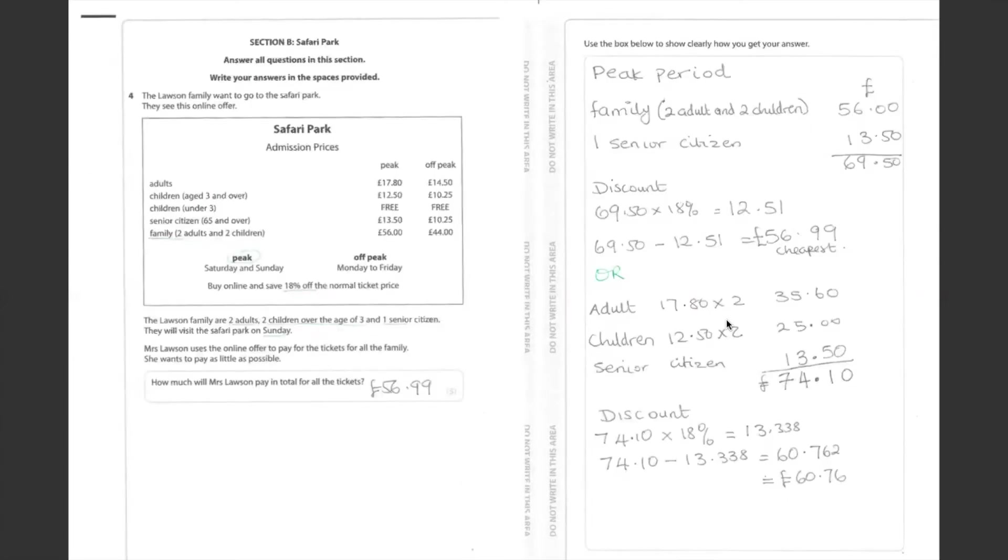Question 4. Lawson family want to go to safari park. And that is the admission prices for safari park. We got the peak period and off peak period. If they buy online, they got 18% off the normal price. Lawson family has two adults, two children over the age of three, and one senior citizen. They visit safari park on Sunday. So, that is going to be the peak period. I will be using the value under the peak period here.